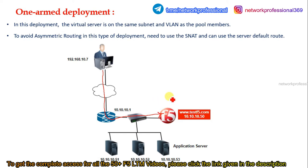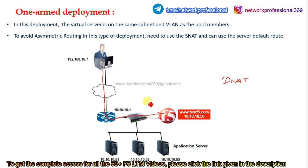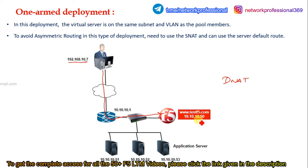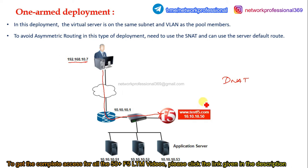By default, F5 will perform destination NAT and not source NAT. If we need source NAT, we need to enable it. Since F5 is in a full proxy setup, it performs destination NAT by default. The user at 192.168.10.7 has no idea about the actual server where the application is hosted — as far as the user is concerned, the application server is 10.10.10.50, which is the virtual server configured in F5. Once the request hits the virtual server, F5 replaces the destination IP from 10.10.10.50 to one of the server IPs based on the load balancing algorithm configured.